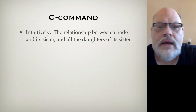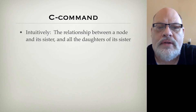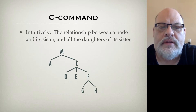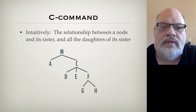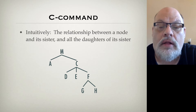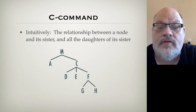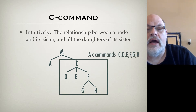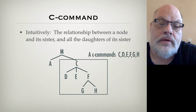Intuitively, C-command is the relationship between some node and its sister, and all the daughters of its sister. So if we look at this tree, we'll see that A C-commands its sister, which is C, and all of the daughters of its sister — D, E, F, G, H — so daughters and granddaughters and so on.